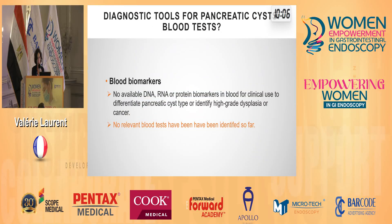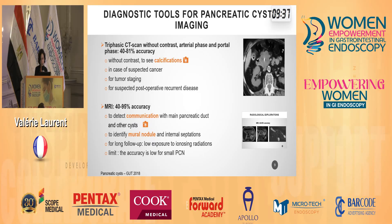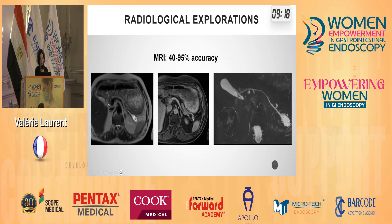What are the diagnostic tools? In blood, there is currently no available blood test for clinical practice. Imaging is much more useful. CT scan without contrast shows calcification very well, but the accuracy for cystic pancreatic lesions is not perfect. CT scan is better for suspected cancer, tumor staging, or suspected recurrent disease. MRI is more accurate for cystic lesions in the pancreas — it is able to detect communication with the main pancreatic duct very well and to identify mural nodules, as you can see in this example. It is also very useful to avoid radiation exposure for the patient.